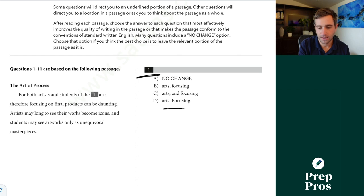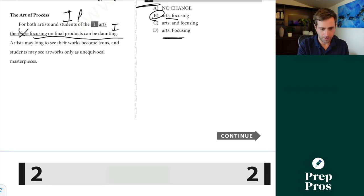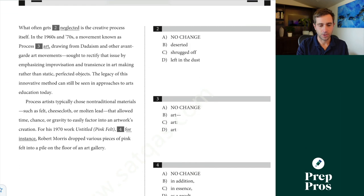Now, this question is testing us on a mix of sentence structure and punctuation based on the answer choices. For both the artists and the students of the arts, this is what we teach as an introductory phrase, blank, therefore focusing on the final products can be daunting. No need for the therefore here at all, but focusing on final products can be daunting is an independent clause. If we have an introductory phrase followed by an independent clause, we can always place a comma between the two of them. So I'm just going to skim through this quickly. What I'm doing in writing and language, I'm reading at a medium fast speed as I'm working through the passage itself.